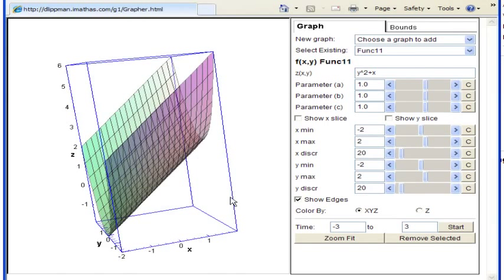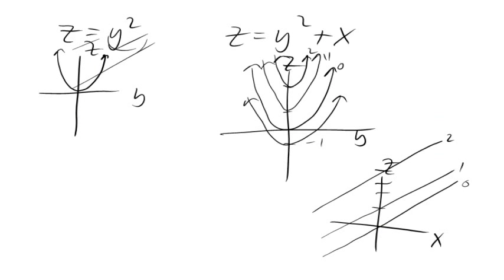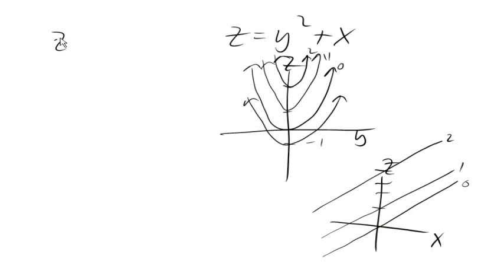Now, we can make this even more interesting by imagining a case like z equals y squared plus x cubed. Where now, we're not shifting these parabolas by a line, but we're shifting it by a cubic.